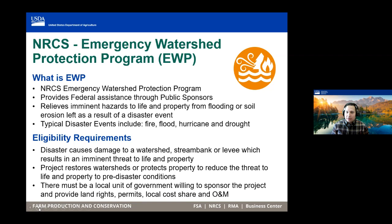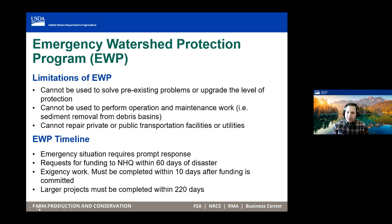The limitations of EWP: typically after a disaster, after about 60 days is when you need to request assistance and we have to request those disaster funds. Work in EWP that is an exigency — meaning an immediate threat to life and property — can be given funds right away and must be done in 10 days. For non-exigency projects — not an immediate threat to life and property — that work can be done in up to 220 days. It really depends on our assessment of each site.